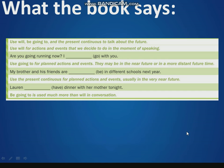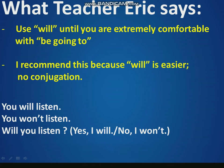Now, what the book says. The book says: will is for actions and events that we decide to do in the moment of speaking. Going to is for planned actions and events. And the present continuous is for planned actions and events, usually in the very near future.